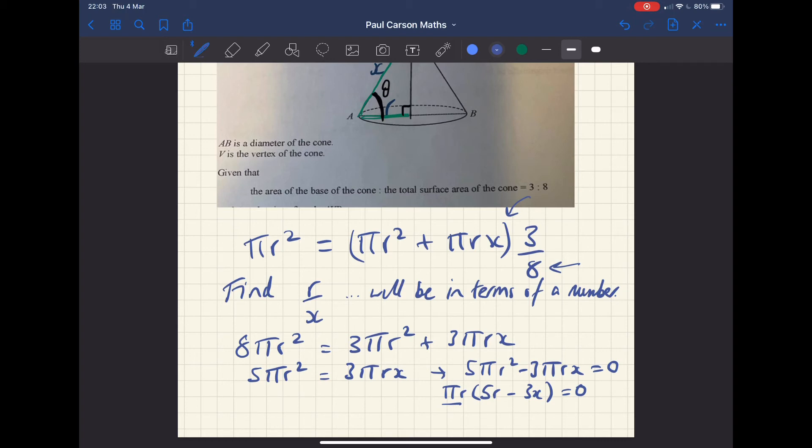And the reason for that is because the brackets, brackets means multiply. So these two things are multiplying each other and the answer is nothing. So that implies that one of them must be zero. Now πr is not zero because π is a number and r is a distance. Times them together, definitely not that. So it must be the other one. So 5r - 3x equals zero.